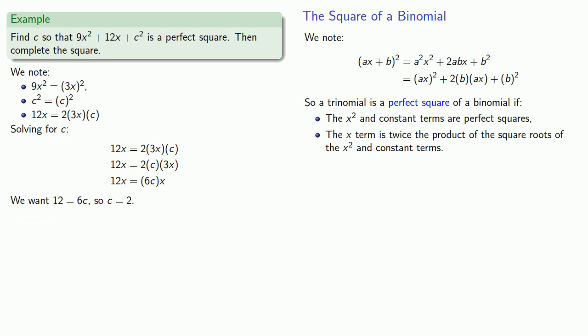So c squared is 2 squared, otherwise known as 4. And so 9x squared plus 12x plus 4 is going to be the square of 3x plus 2.